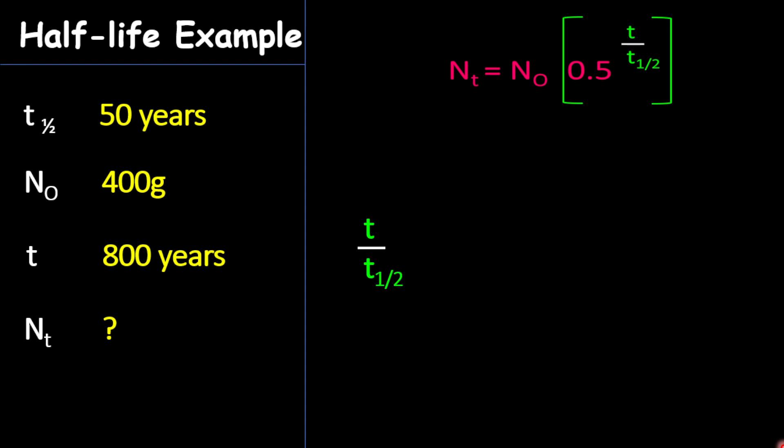Now, what I like to calculate first is the number of half-lives, which is t divided by the half-life. And so here, it will be 800 divided by 50. And so what we get there is 16 half-lives. In other words, the 400 grams have been dividing by a half 16 times within the period of 800 years.